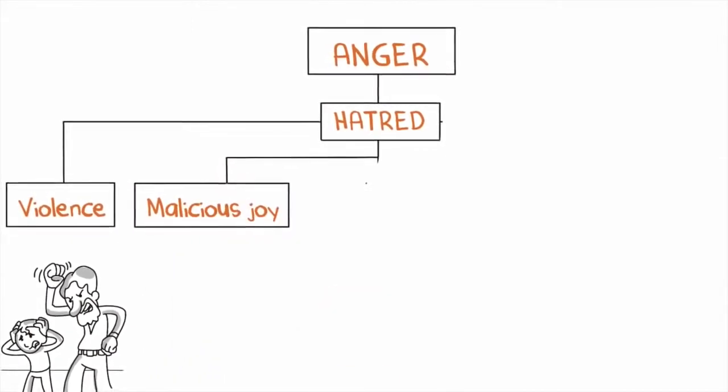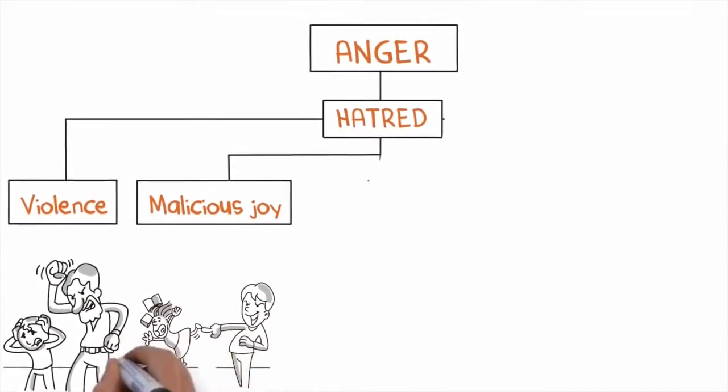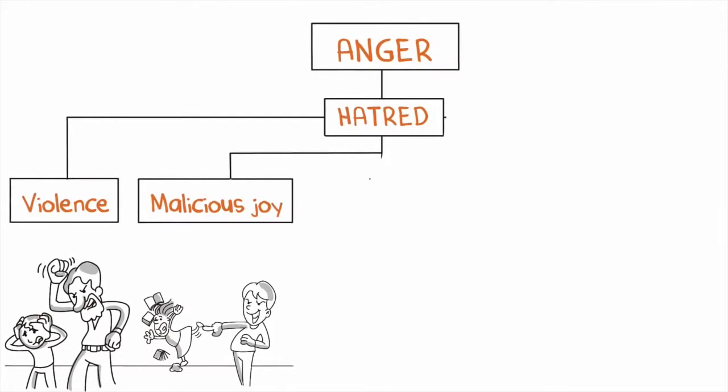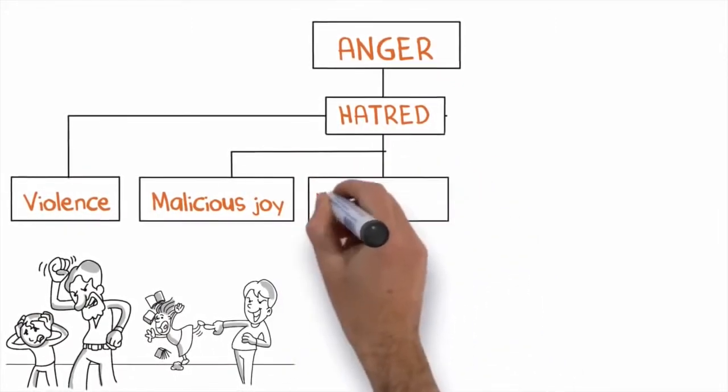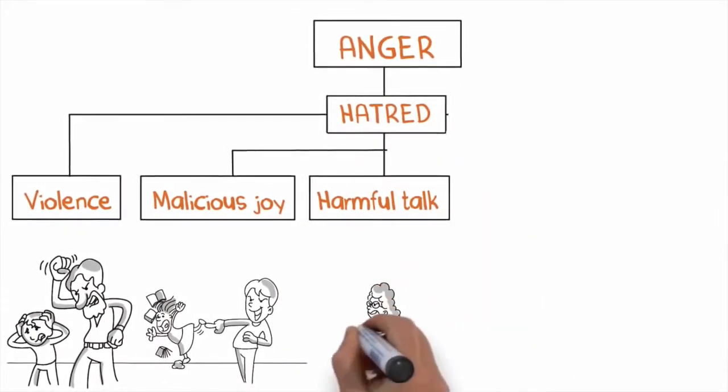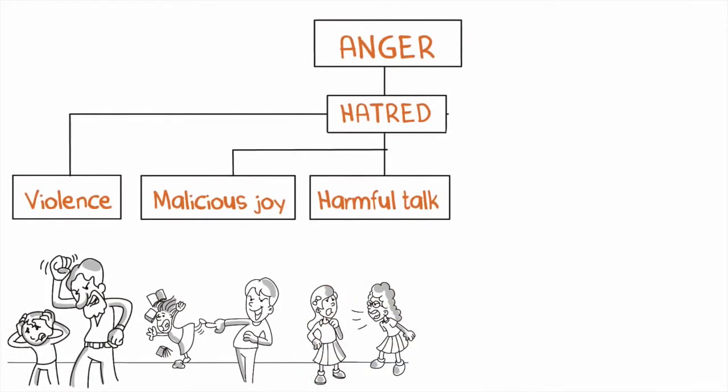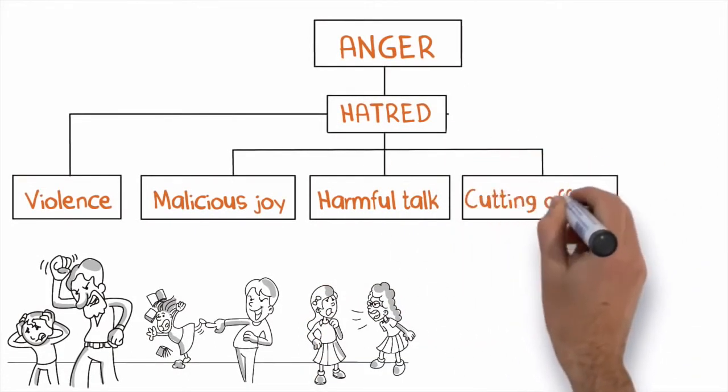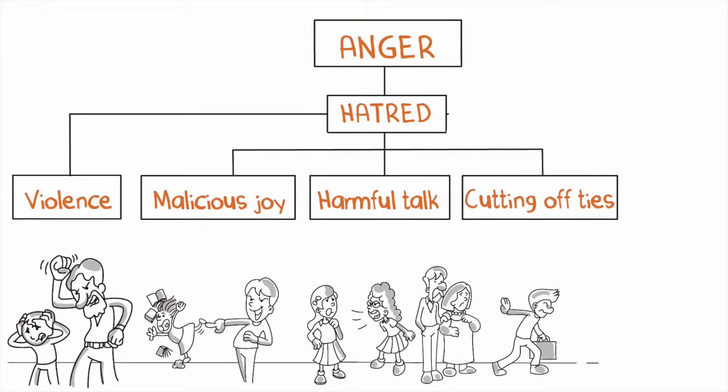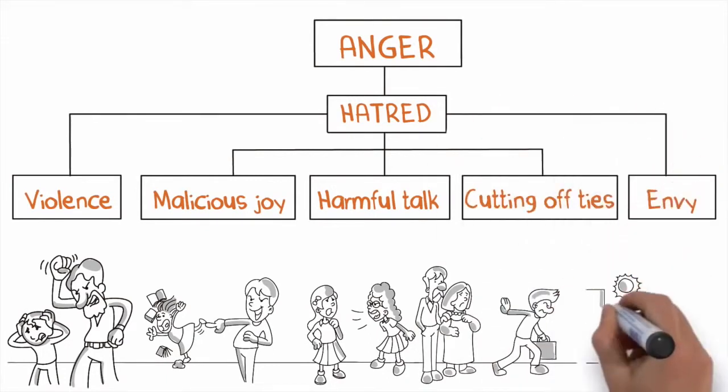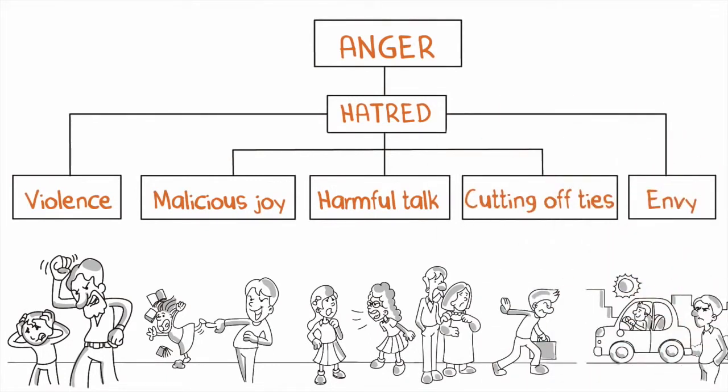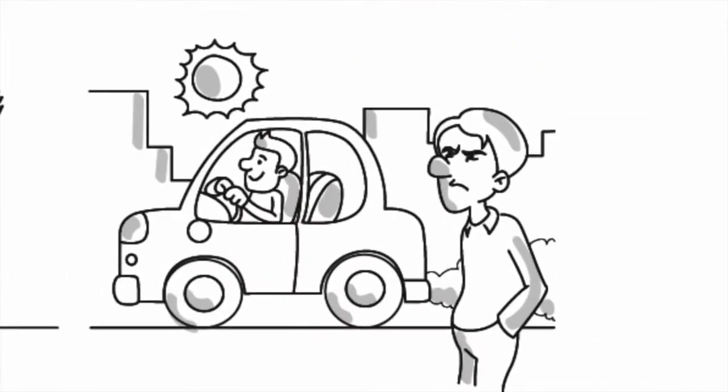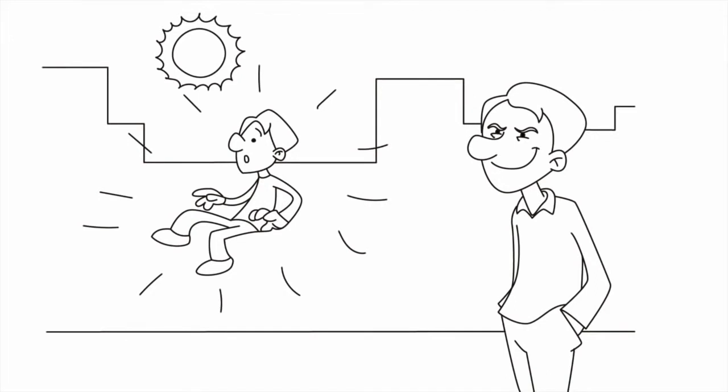Therefore, hatred is the offspring of anger, and from it grandchildren are born, among which are violence, malicious joy or schadenfreude, rejoicing in others' misfortune, harmful talk like backbiting, lying, and insulting, cutting off family ties and not repaying debts.